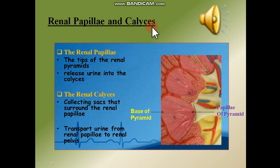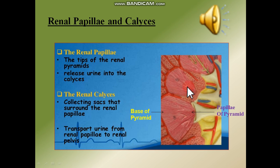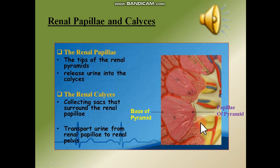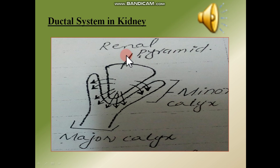The renal papillae are the tips of the renal pyramids, and they release urine into the calyces. The tips of the renal pyramids are continuous with the calyces, and urine formed in this region moves into the calyces. The renal calyces are collecting sacs that surround the renal papillae. This is the base of the pyramid and this is the papillae; the renal calyces transport urine from the renal papillae to the renal pelvis.